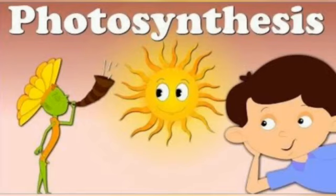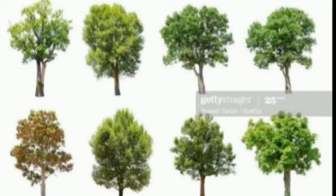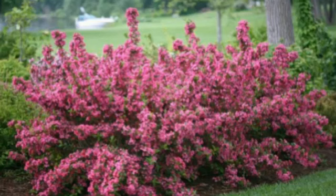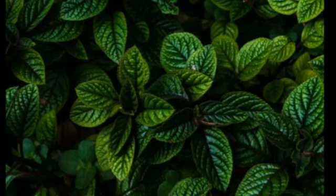Now, let us see what is photosynthesis. Photosynthesis is a process by which plants make their own food. For example, plants, trees, shrubs and grasses make their own food. The word photosynthesis comes from two words: photo means light and synthesis means to make or put together. The plants manufacture food that gives energy to the plants.